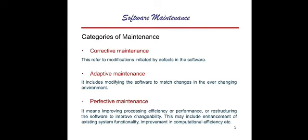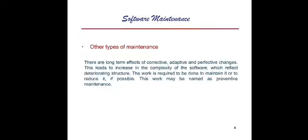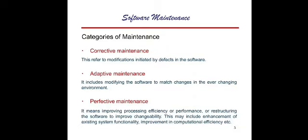Sometimes we want to enhance the properties of the software, so it is the optimization. There are different categories of maintenance: corrective maintenance, adaptive maintenance, perfective maintenance, and preventive maintenance. Corrective maintenance is generally initiated by the defects in the software. Whenever we execute the software and find some errors, we debug those errors, and this is the maintenance phase.